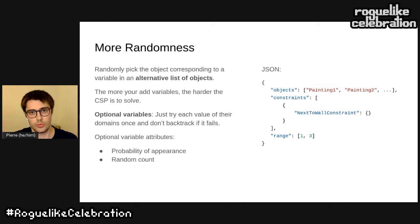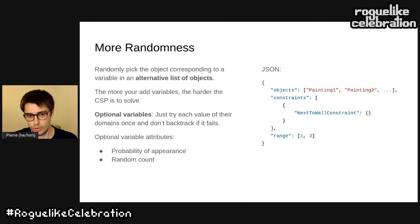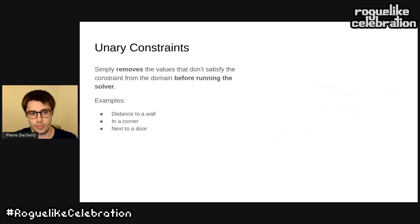What's nice with optional objects is that since they're not required, we can make them more random — with, for example, a probability of appearance or a random count. This really helps to add variability.